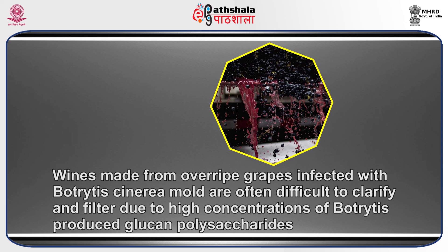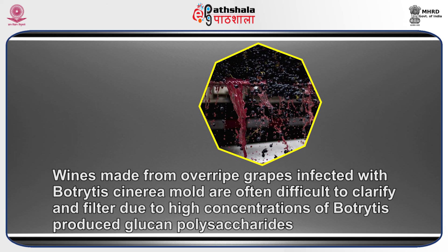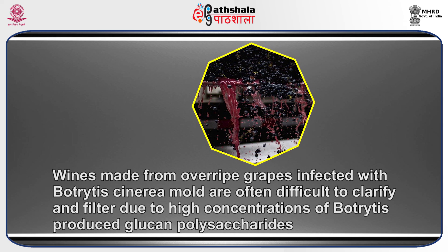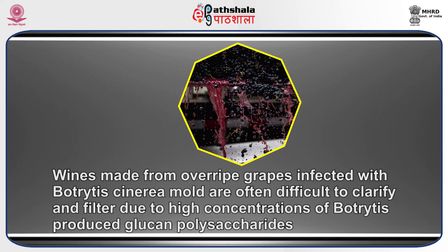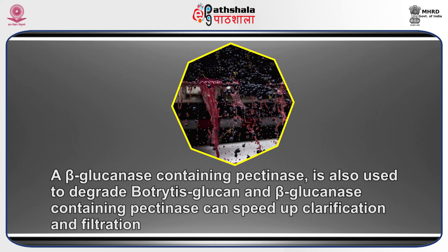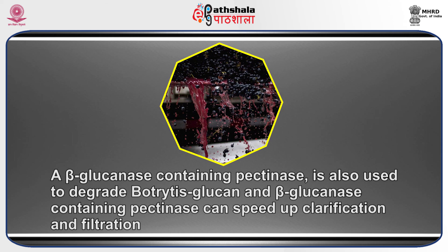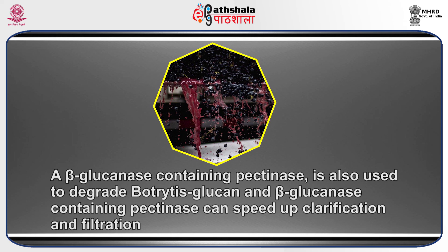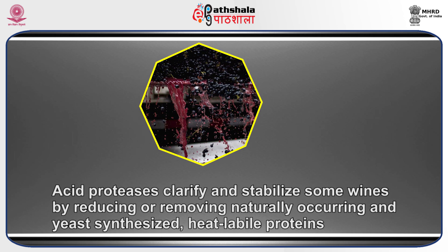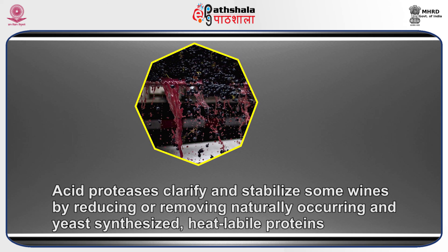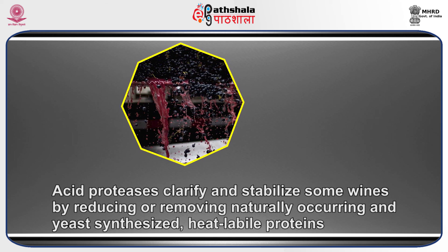Wines made from overripe grapes infected with Botrytis cinerea mold are often difficult to clarify and filter due to high concentrations of mold-produced glucan polysaccharides. A beta-glucanase containing pectinase is used to degrade Botrytis glucan, and can speed up clarification and filtration. Acid proteases clarify and stabilize some wines by reducing and removing naturally occurring and yeast-synthesized heat-labile proteins.